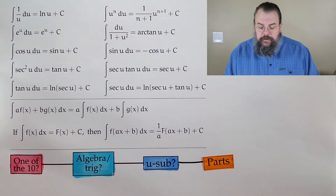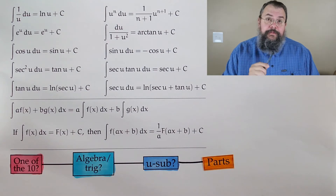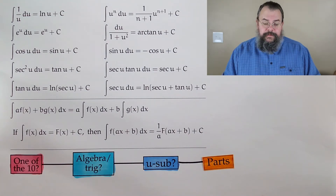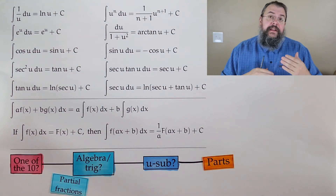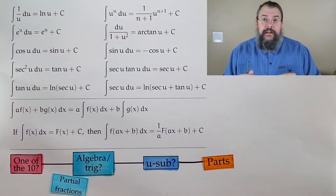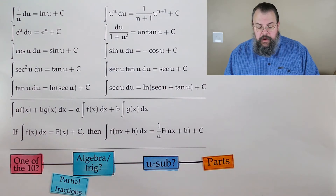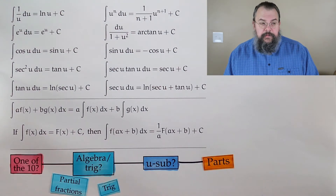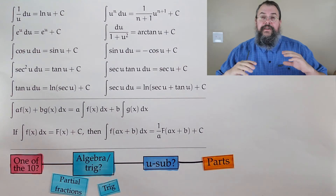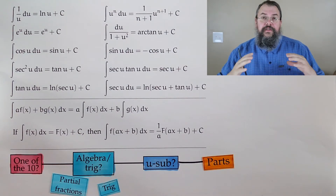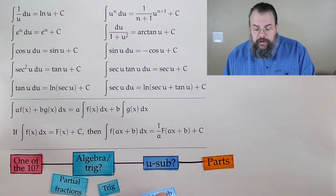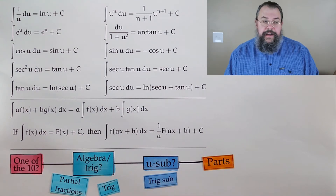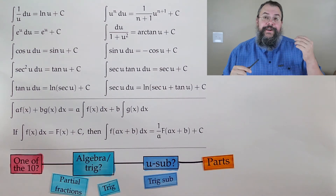You might be wondering what else we're going to learn. Well, we're going to beef up our skills when it comes to algebra and trig. For example, we'll talk about something called partial fractions — an algebra technique that allows us to pull apart rational functions. We're also going to spend some time talking about trig: how do we reduce expressions using trigonometric identities, and how do we solve particular integrals using trig functions? When it comes to u-substitution, we're going to learn a nice technique called trig substitution.